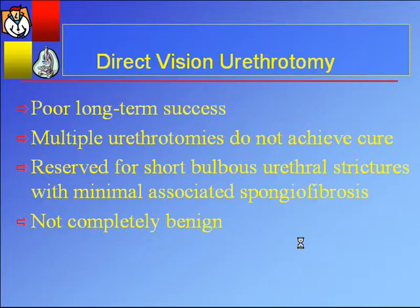It all depends on stricture characteristics and how the procedure is done. Some strictures are very thin with minimal spongiofibrosis, and those are the ones amenable to DVIU. Direct vision urethrotomy for a scar with significant spongiofibrosis has poor long-term success. Multiple urethrotomies — as Pansadoro and Emiliozzi showed brilliantly — do not achieve cure. After two or three, there will be no chance of success; it becomes a palliative procedure. DVIU should be reserved for those with short-segment bulbous urethral strictures with minimal spongiofibrosis. If there is a significant scar and significant spongiofibrosis, the majority will fail.